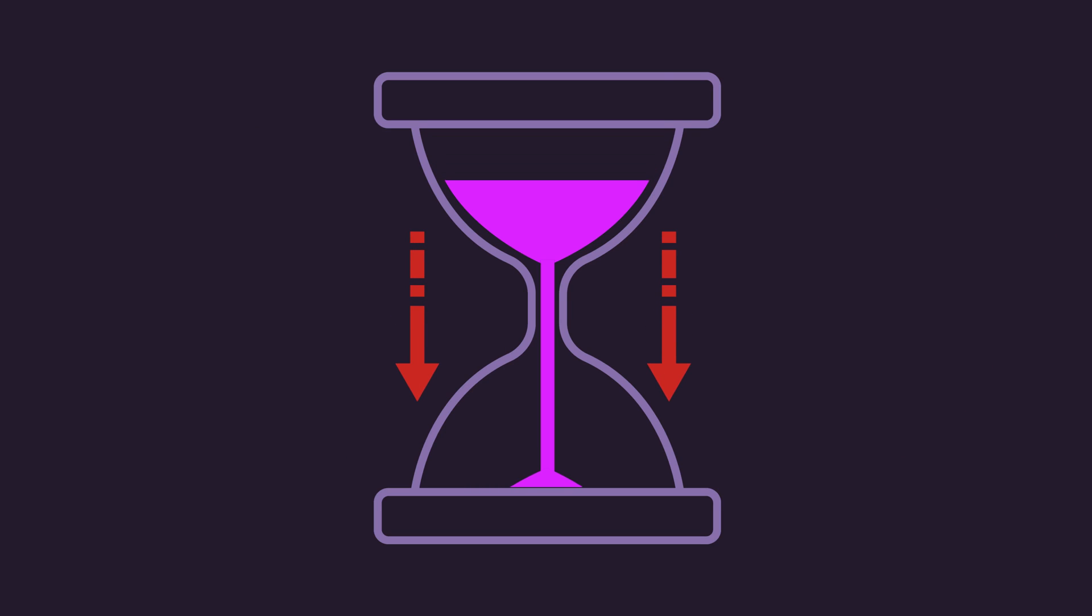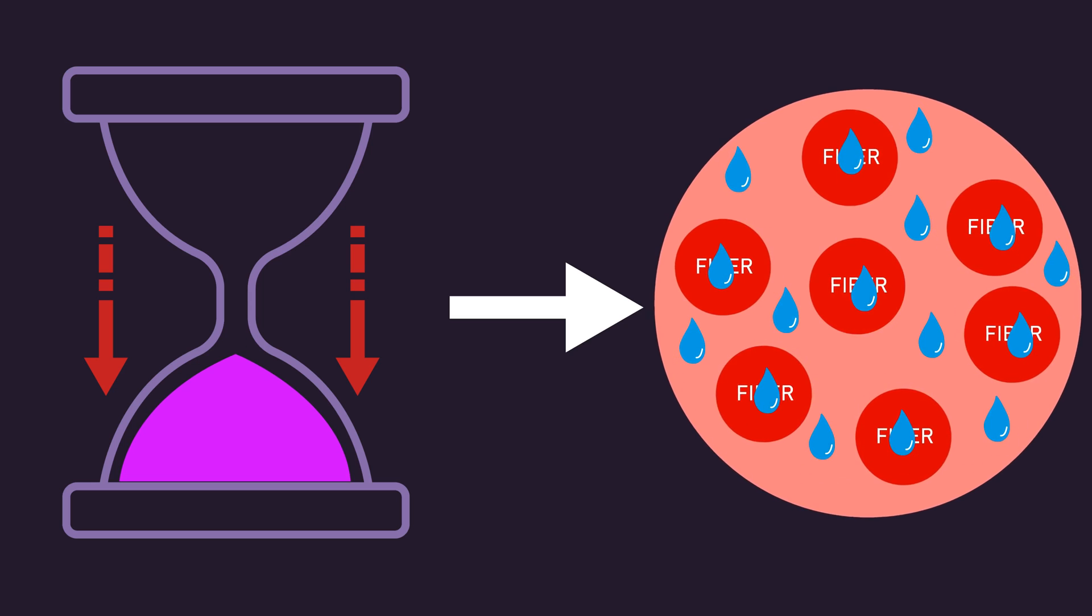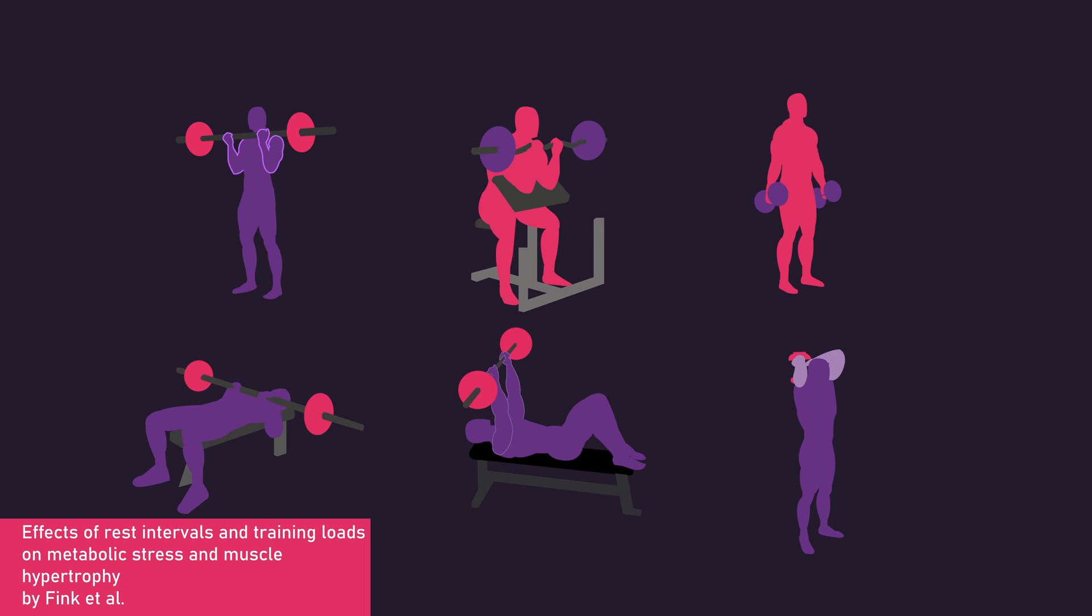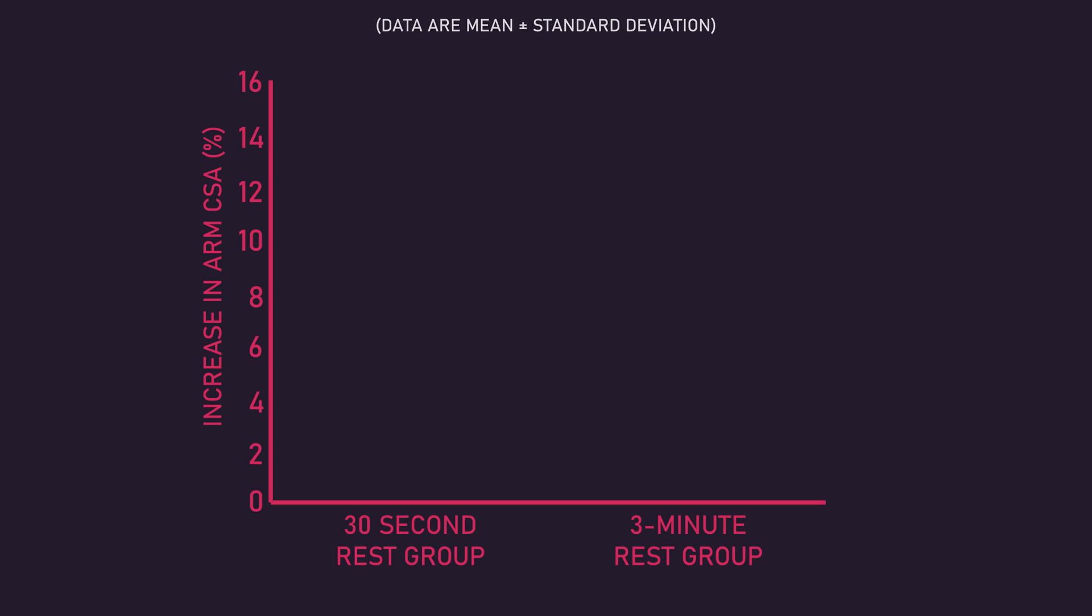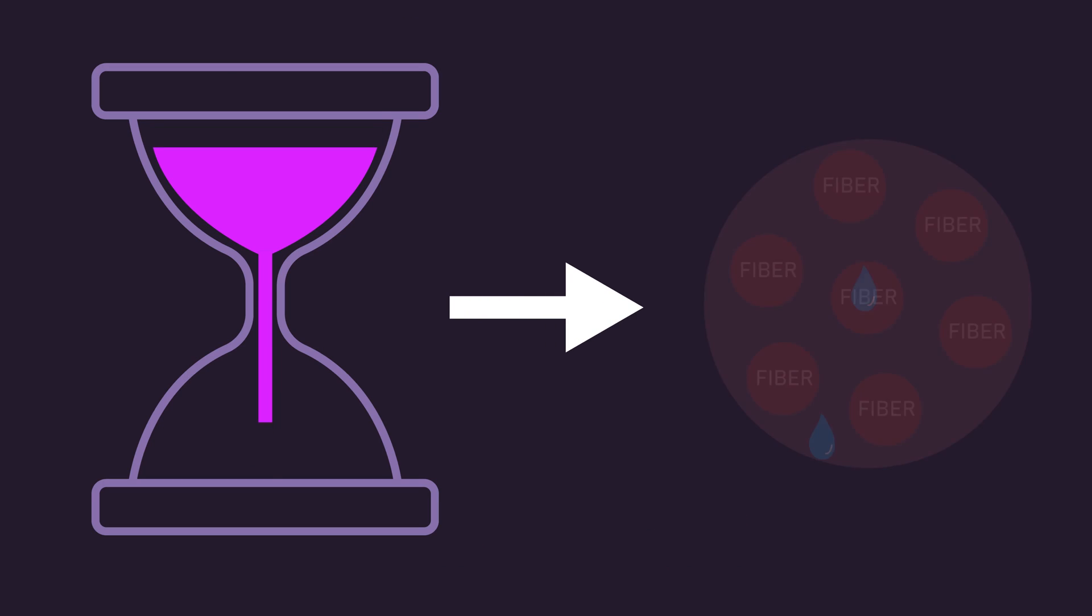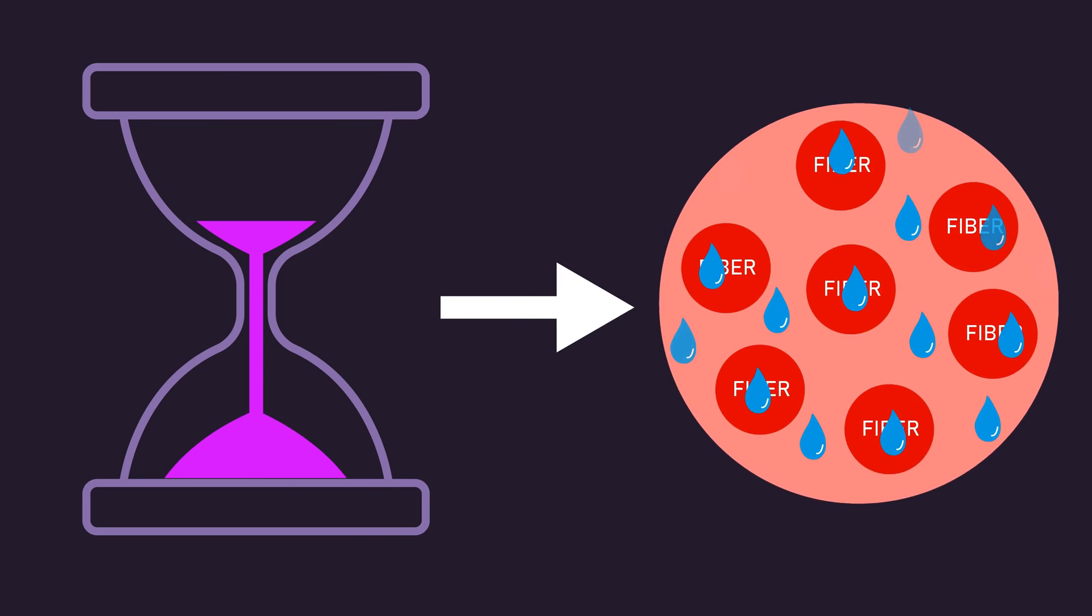Using shorter rest intervals between normal sets would also evoke a greater pump, as a lessened rest heightens the factors that drive the pump. As examined in our Rest Interval Ultimate Guide video, the research on the optimal rest interval duration with isolation exercises isn't crystal clear. But one study by Fink and colleagues found that when performing sets on 3 triceps and 3 biceps isolation exercises per session, resting for 30 seconds between sets produced greater arm cross-sectional area increases compared to resting 3 minutes between sets. It's plausible the greater pump with shorter rest intervals could be the cause of the more hypertrophy.